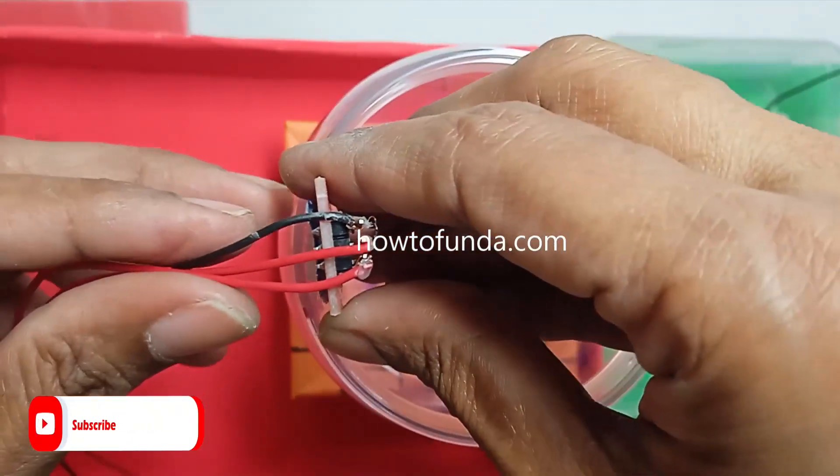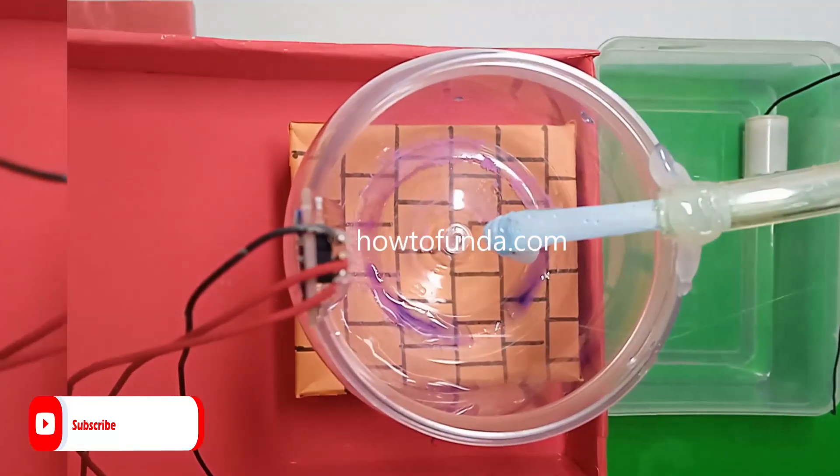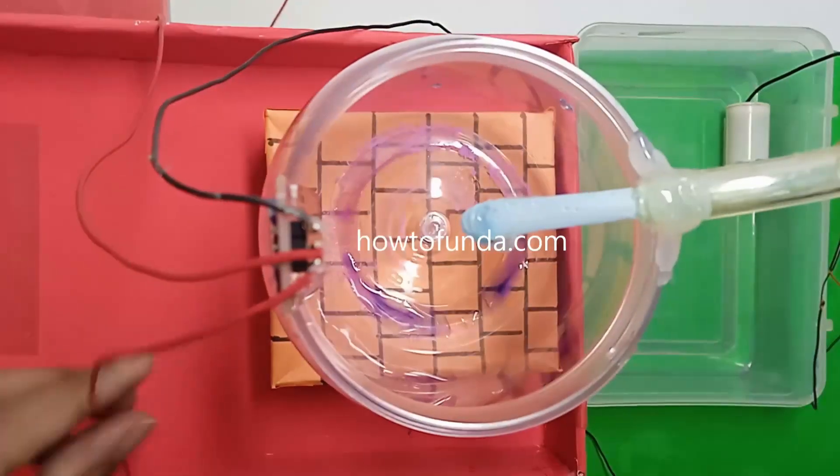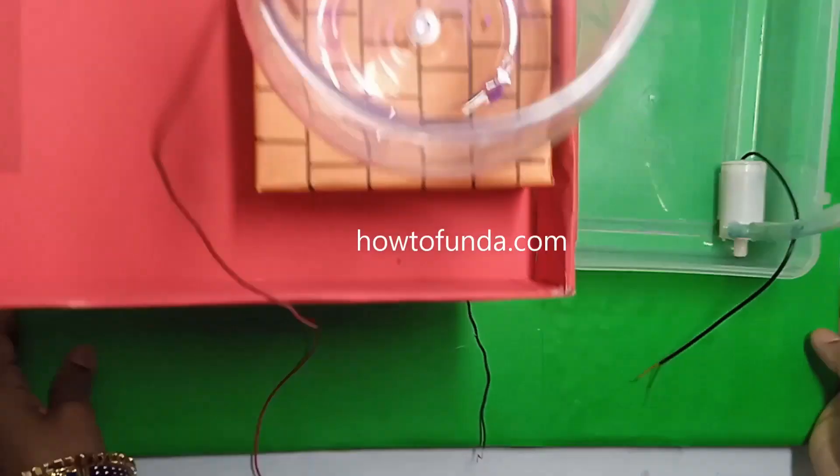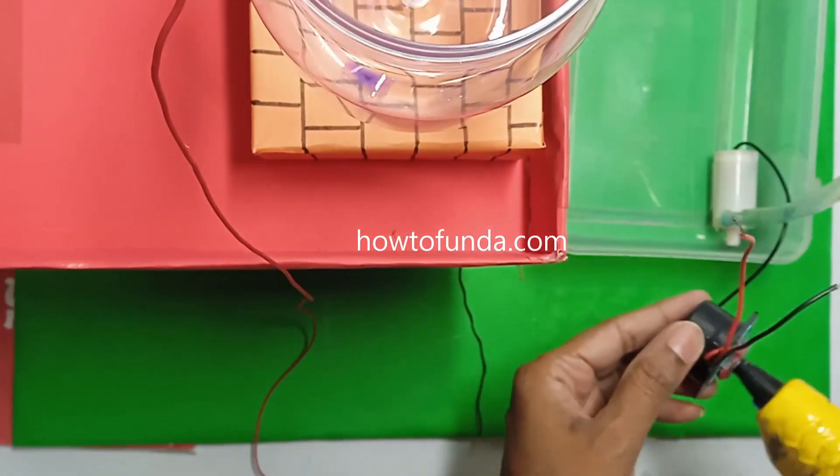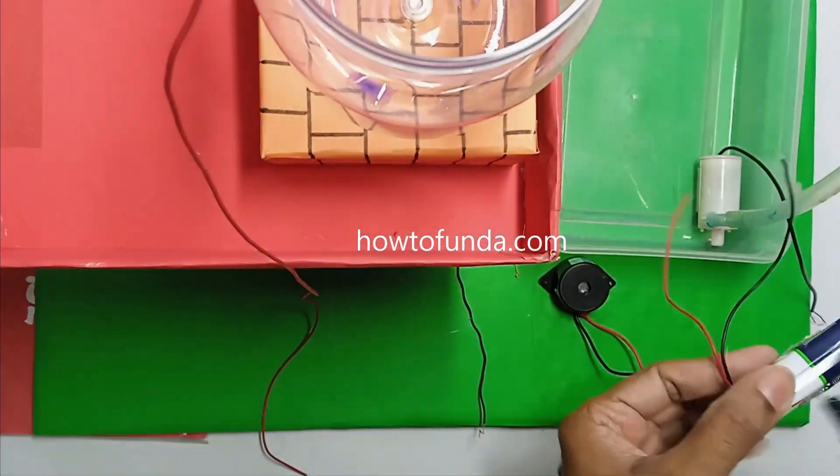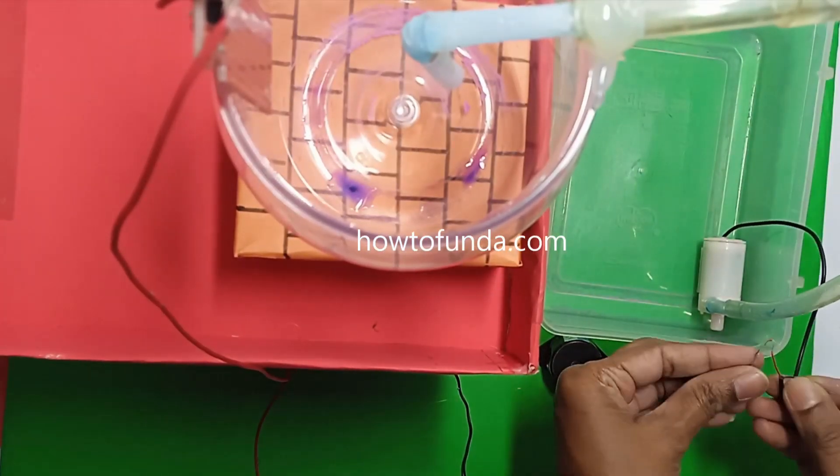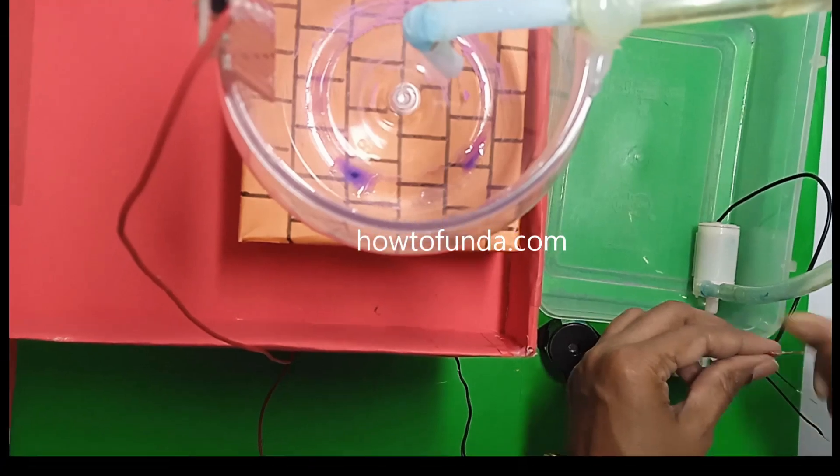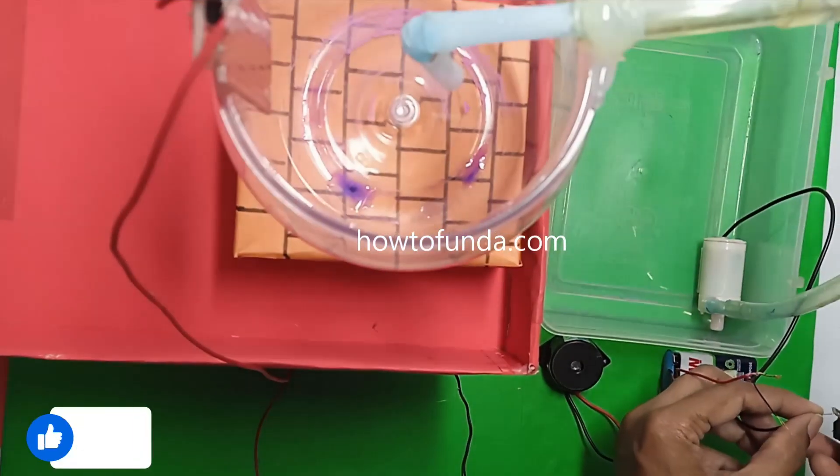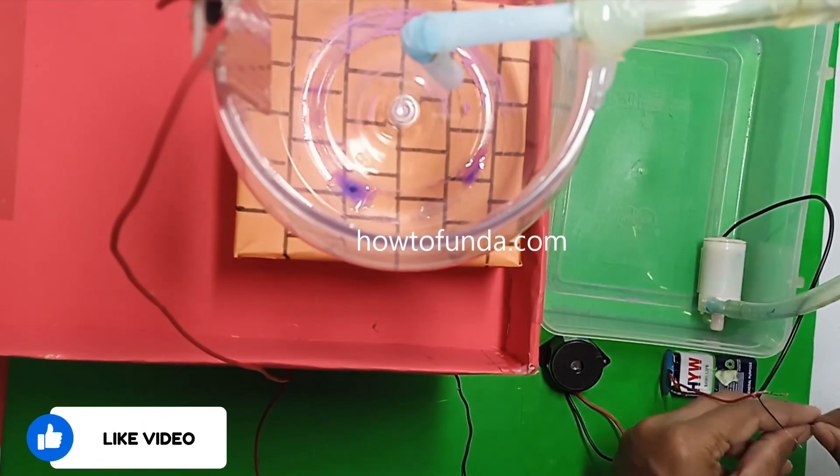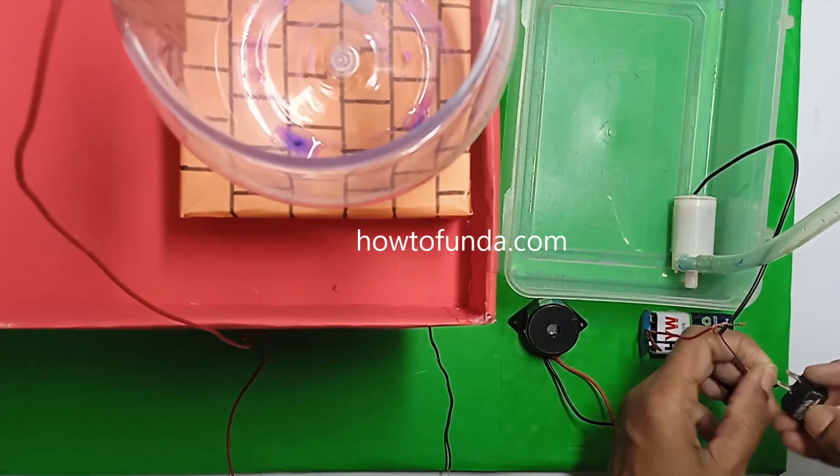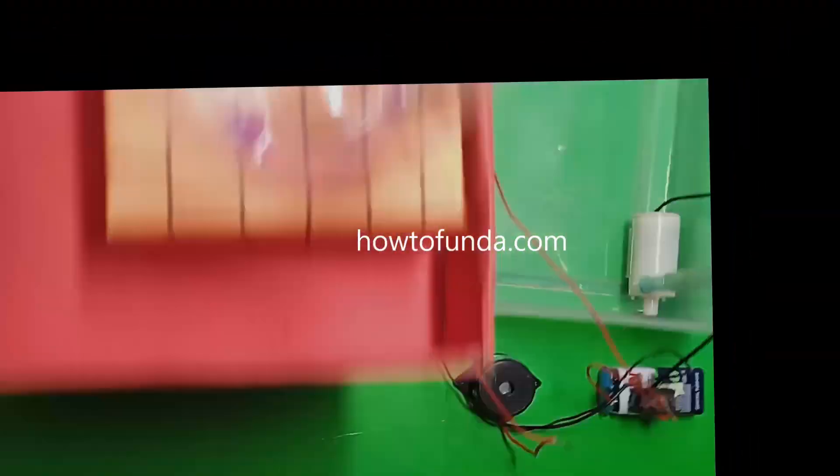This water sensor detects when water reaches the top point. When it reaches the top point, it sends a signal and activates the buzzer. When the buzzer rings, it signals to you that the water is going to overflow - kindly switch off the motor. That is the main purpose of this working model.